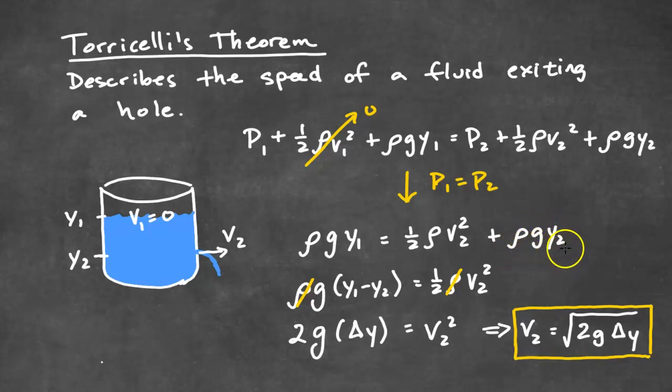So that leaves us with rho GY1 is equal to one-half rho V2 squared plus rho GY2. We're going to move the rho GY2 to the left-hand side. We're going to cancel out the rhos on both sides. They cancel out. That leaves us with G times Y1 minus Y2 equal to one-half V2 squared. We're going to multiply two on both sides. That gets rid of the one-half. And then we're going to square root both sides of the equation, and that leaves us with V2 is equal to square root 2G delta Y.